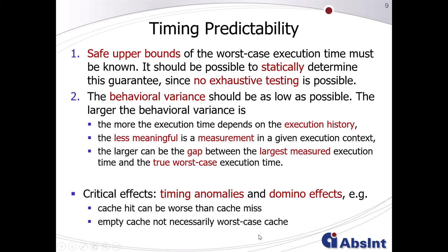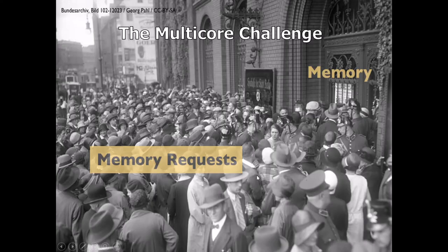So far we have talked about individual tasks running on single-core architectures, but what happens if you migrate the application to a multi-core platform? This photo taken in 1931 at the time of the banking crisis impressively shows what will happen if you have a shared but limited resource — like the bank and its money, or in technical terms, our memory — and many people want to allocate that resource in parallel, like memory requests. This may lead to contention and blocking effects.